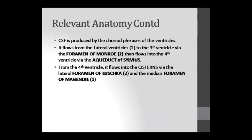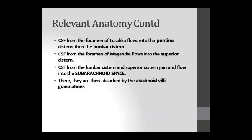CSF is produced by the choroid plexus of the ventricles. From two lateral ventricles it flows to the third ventricle via the foramen of Monro. Then it flows to the fourth ventricle through the aqueduct of Sylvius. From the fourth ventricle it flows to the cisterns via the lateral foramen of Luschka, then through the median foramen of Magendie.